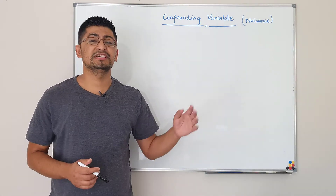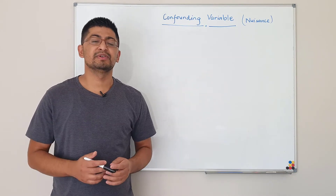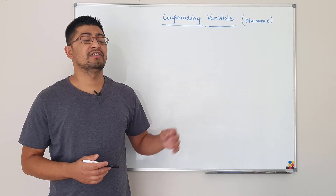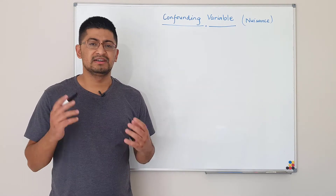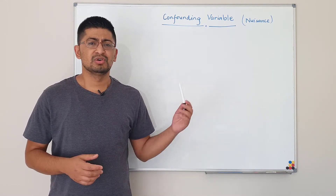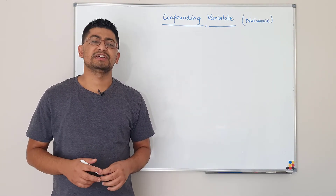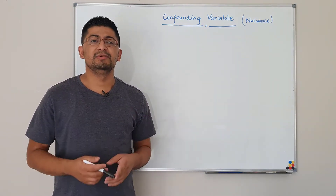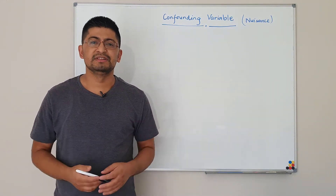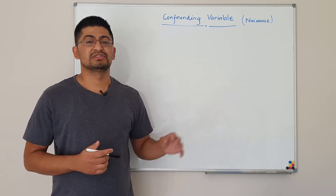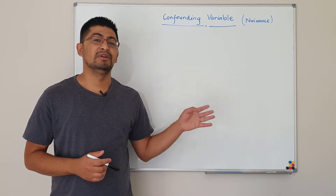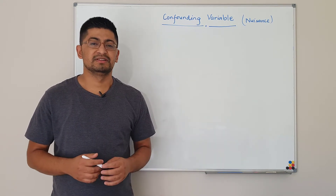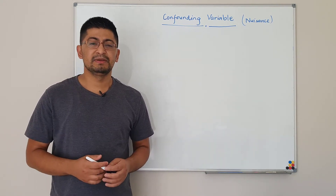Today I have come up with another video on confounding variable, or nuisance variable, which is a really important topic if you are in the field of research, because this confounding variable might bias results obtained from your study. In this video I'll cover what a confounding variable is, give you two or three examples, and show you how to avoid or manage those confounding variables. Let's get straight into the topic.